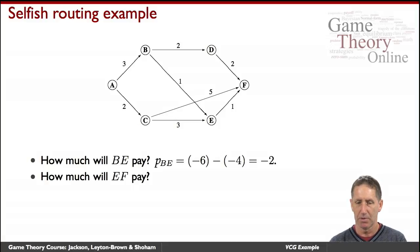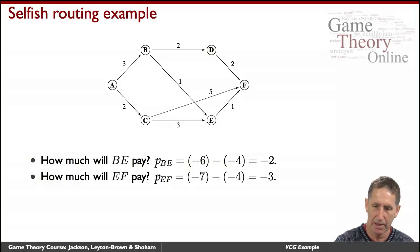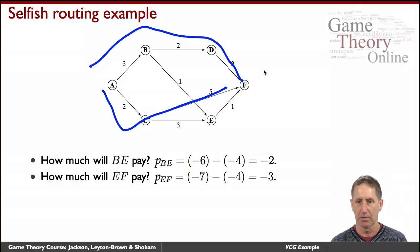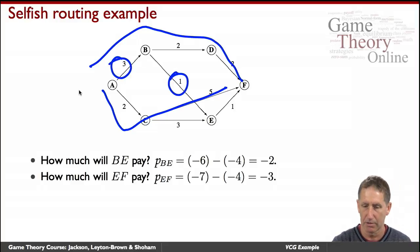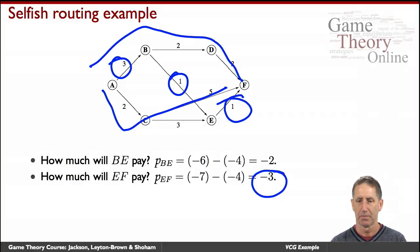How much will BE pay? p_BE = (-6) - (-4) = -2. How much will EF pay? p_EF = (-7) - (-4) = -3. EF and BE have the same costs but are paid differently. Why? In their case, they will be getting a payment of 3. Without them in the picture, the shortest path would be at cost of 7. With them, the cost is 4. So they get the difference of 3. The payment would be 3 and therefore the net profit would be 2.